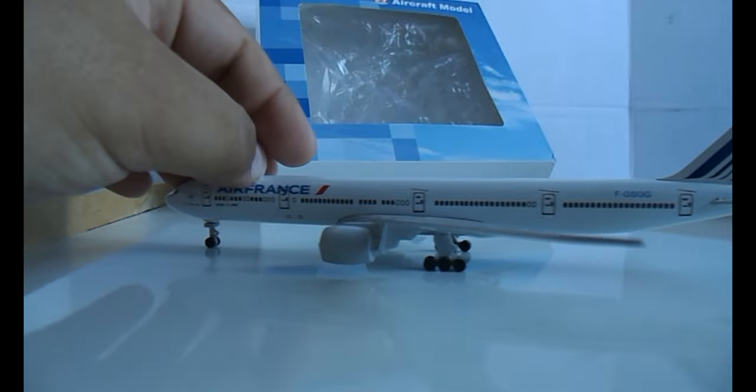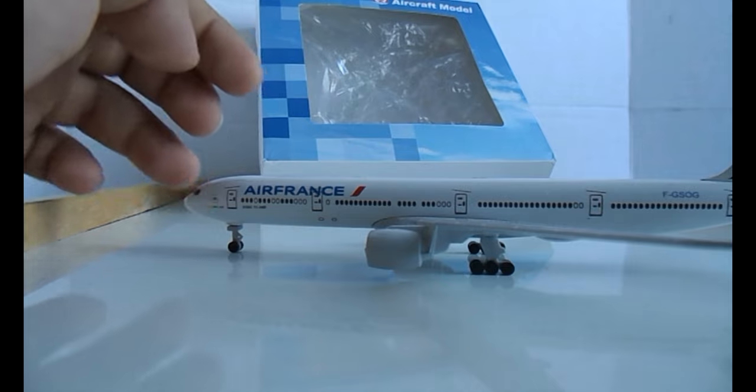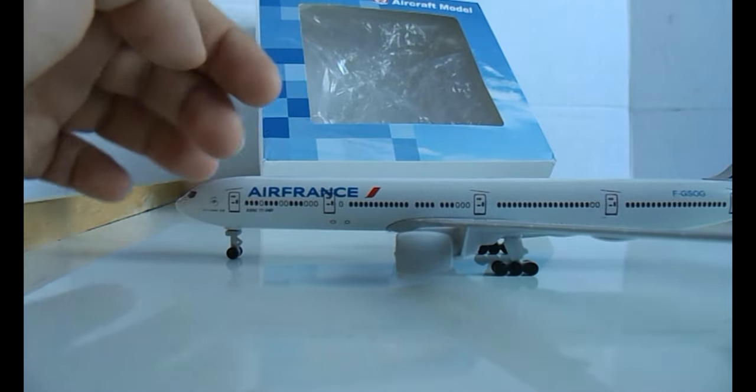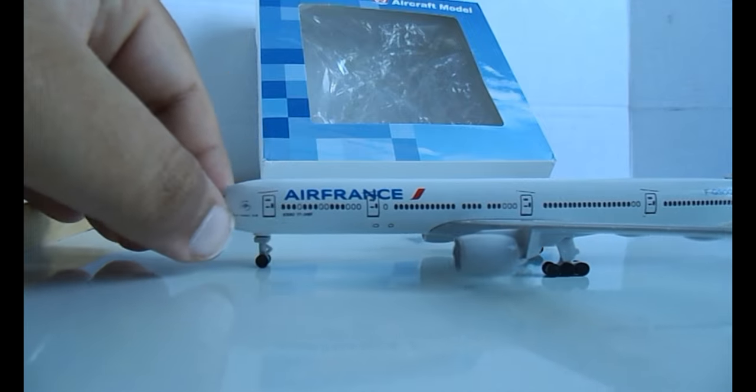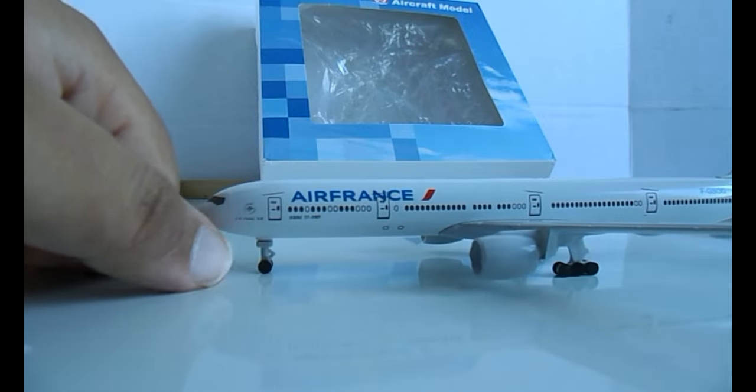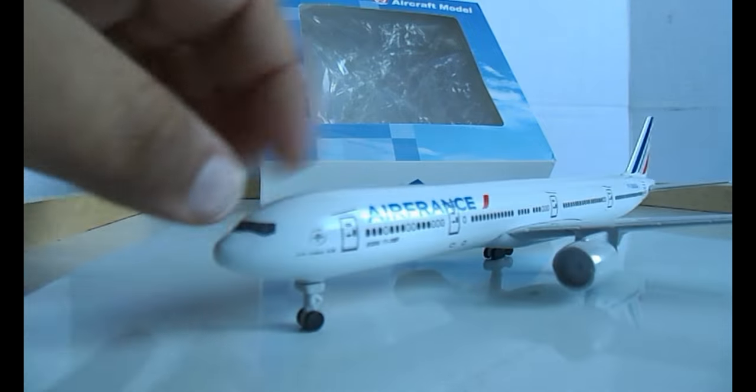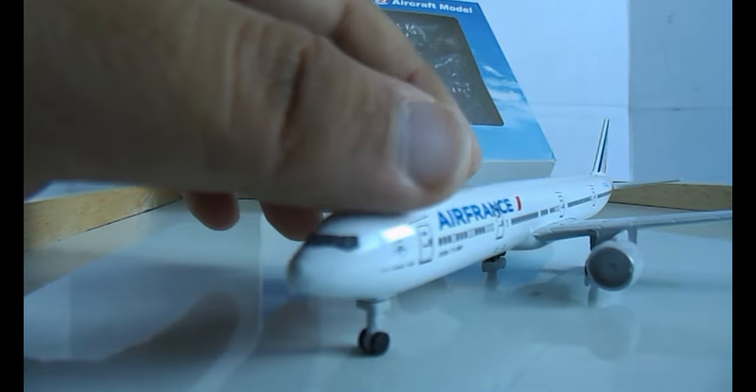You have the over-the-wing exits, you have the front exit doors. Again, Air France logo, Boeing 777-300ER, you have the SkyTeam logo, KLM and Air France logo. And then looking at the front right there, you can see the wipers.